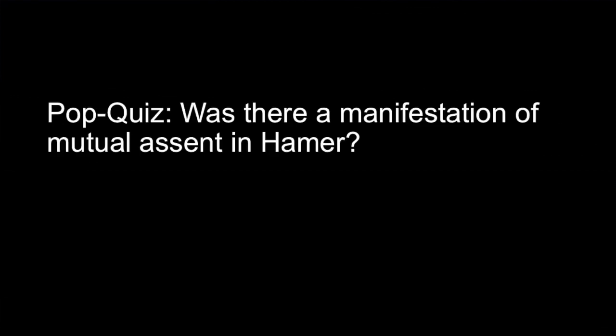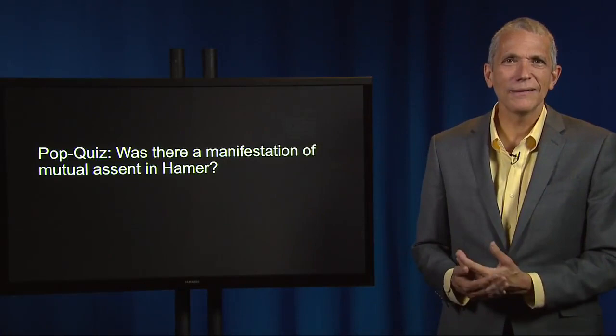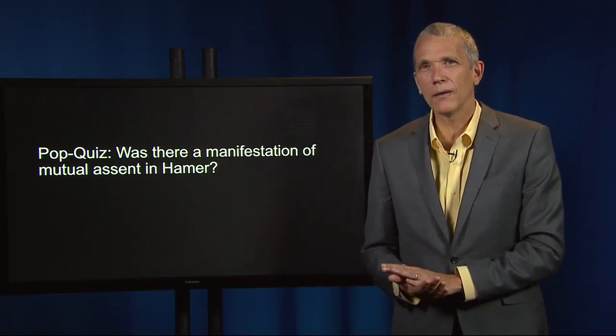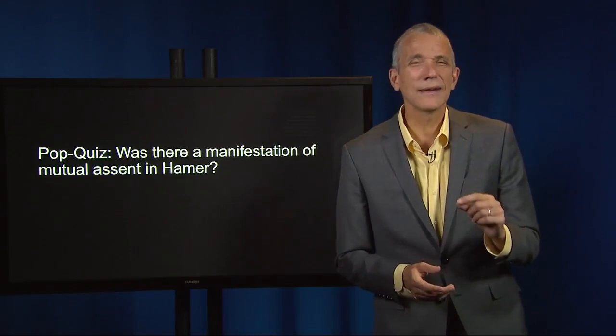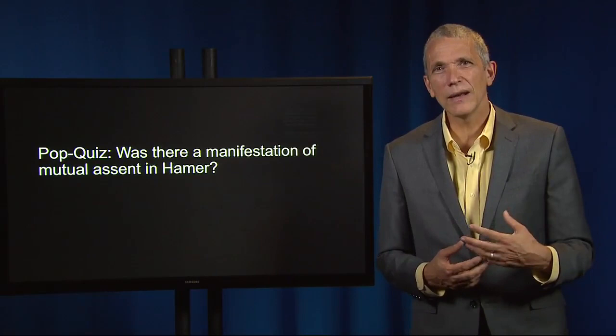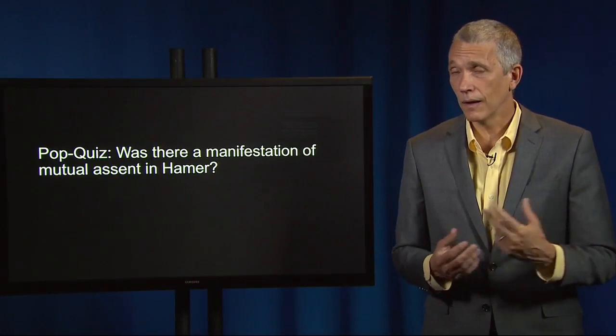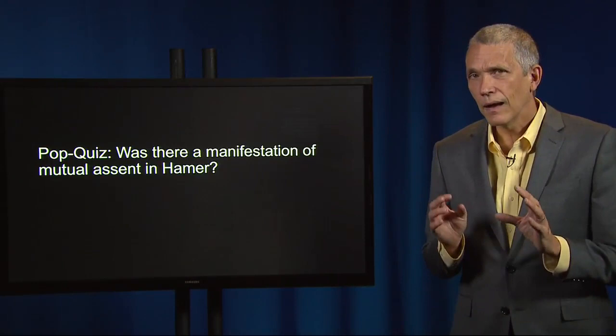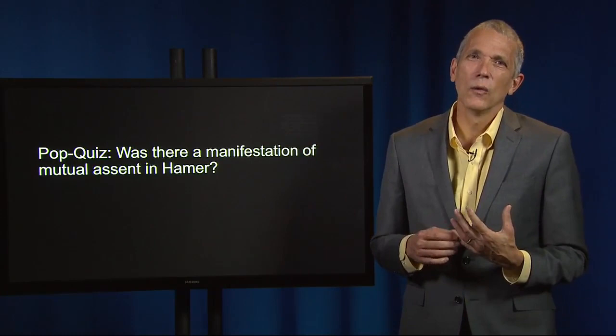Was there a manifestation of mutual assent in Hamer? You bet. The uncle made an offer and the nephew assented. From that moment on, both parties were bound to a contract — that is, if there is sufficient consideration. Once the contractual bell rings, the nephew would have breached a contract created by the exchange of promises if he drank at any point after promising. So Hamer v. Sidway is included in most contract casebooks because it helps teach us what counts as consideration.